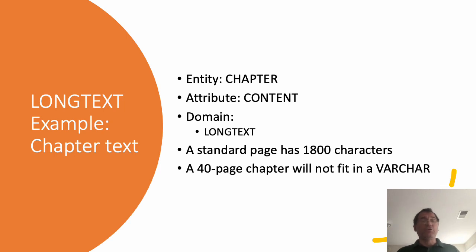And we will consider a few examples so you can see where such a situation may appear. For instance, we will use long text if we have an entity chapter and we want to imagine a chapter in a book, let's say, and we want to have an attribute content that will keep the text, the entire text of that chapter. And in that case this might be pretty long. So considering the standard page is around 1800 characters, a 40-page chapter will not fit in a variable character. And to be sure, you will need to use for such a case long text. We will have very rare use of long text. Most of the cases will be covered by char and variable character, character and variable character, char and varchar type.